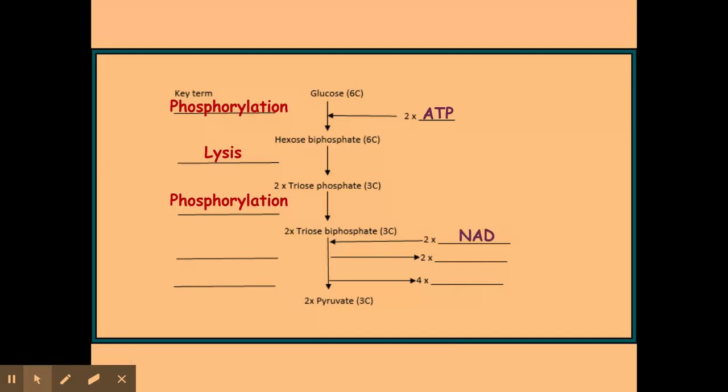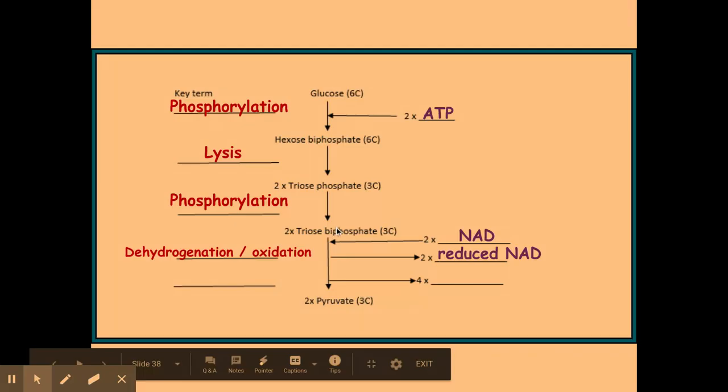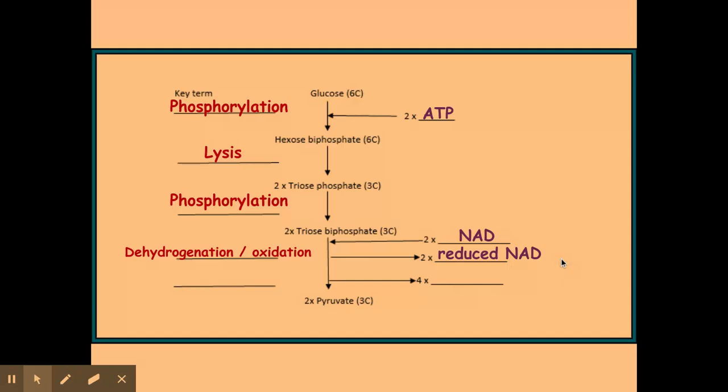So I have NAD, which is a coenzyme, and my NAD will become reduced NAD, and it will do this by dehydrogenation. So it's taken away a hydrogen from my triose bisphosphate, and my hydrogen has reduced my NAD, which is why it's now called reduced NAD. And my triose bisphosphate has become dehydrogenated or oxidized, as it's had a hydrogen removed. This reduced NAD will then be used at a later point within the respiration process.